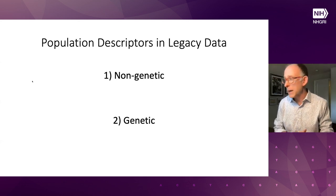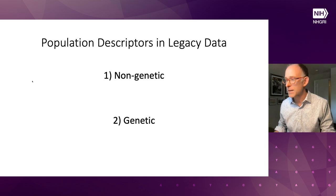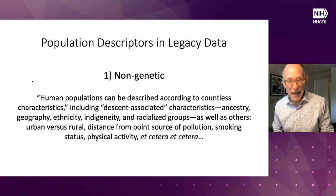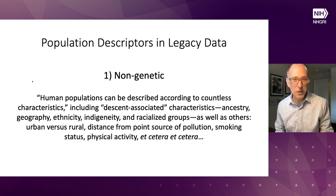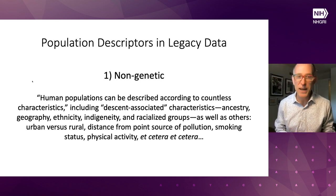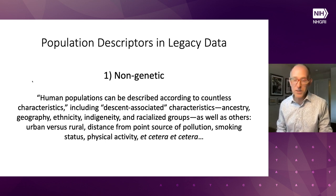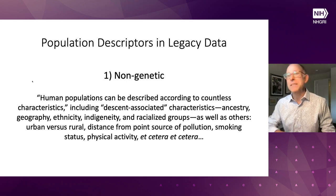I want to talk about two kinds of population descriptors that come up in legacy data: genetic and non-genetic. As the NASM report pointed out, human populations can be described according to countless characteristics. Some we might classify intuitively as descent-associated — things like ancestry, geography, ethnicity, indigeneity, racialized groupings. But there are also other important characteristics relevant for genetics, genomics, epidemiology, and population health research generally, such as urban versus rural, distance from a point source of pollution, smoking status, and physical activity.